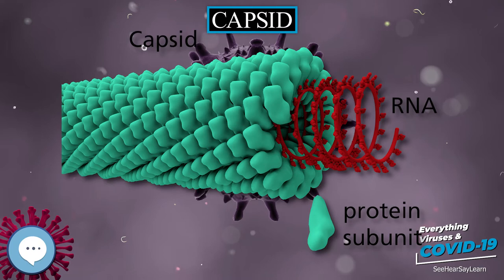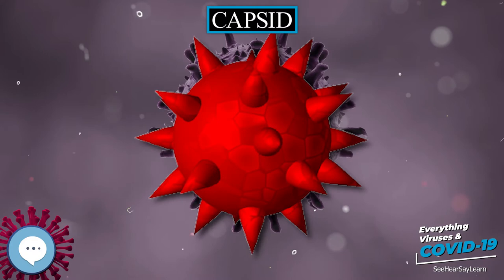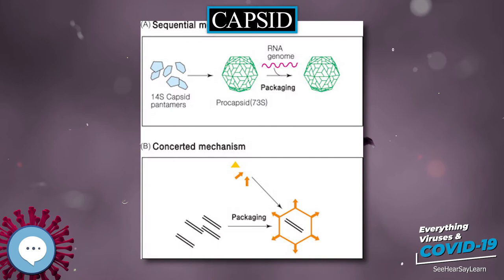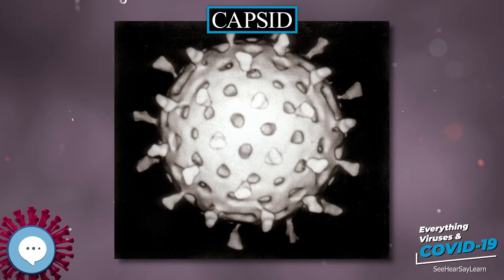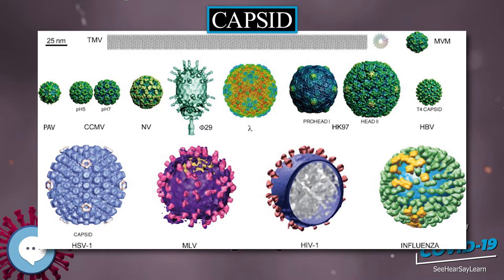The icosahedral shape, which has 20 equilateral triangular faces, approximates a sphere, while the helical shape resembles the shape of a spring, taking the space of a cylinder but not being a cylinder itself. The capsid faces may consist of one or more proteins. For example, the foot and mouth disease virus capsid has faces consisting of three proteins named VP1, VP2, and VP3.